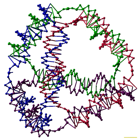DNA nanostructures must be rationally designed so that individual nucleic acid strands will assemble into the desired structures. This process usually begins with specification of a desired target structure or function. Then, the overall secondary structure of the target complex is determined, specifying the arrangement of nucleic acid strands within the structure and which portions of those strands should be bound to each other. The last step is the primary structure design, which is the specification of the actual base sequences of each nucleic acid strand.